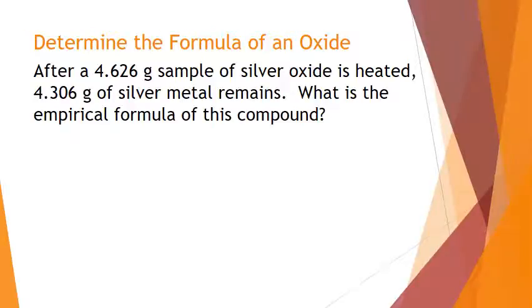So here's a question, a typical one. We've got a couple of masses right away. So we've got a mass of silver oxide and we've got a mass of silver. What's the empirical formula of this compound?